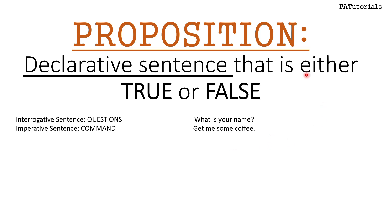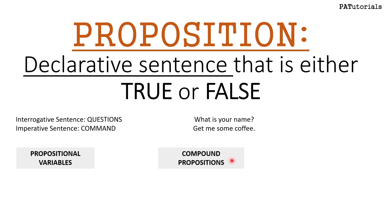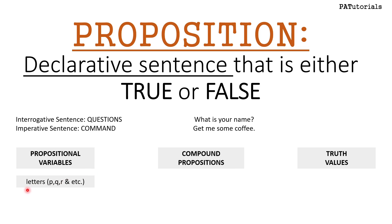When we say proposition, we have three definitions to understand. The first one is propositional variables — letters that denote the proposition. These letters can be p, q, r, etc., or a, b, c — it depends on you.